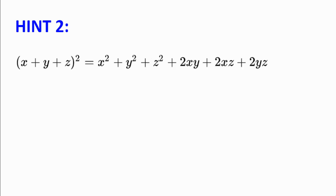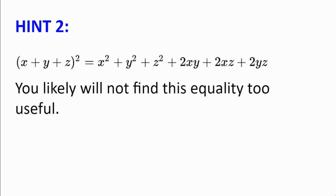Hint number two. (x + y + z)² = x² + y² + z² + 2xy + 2xz + 2yz. We may find after some investigation that this equality is not too useful, the reason being it's too symmetric. Why not try to subtly change the left-hand side?